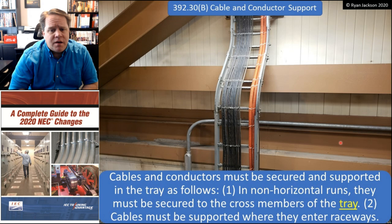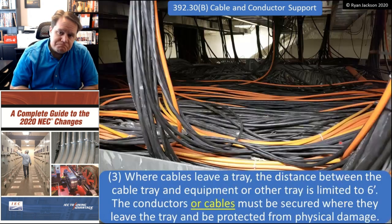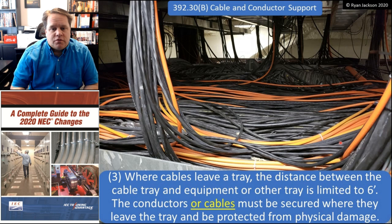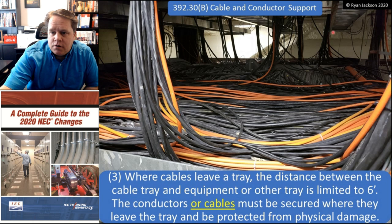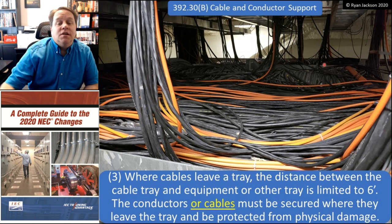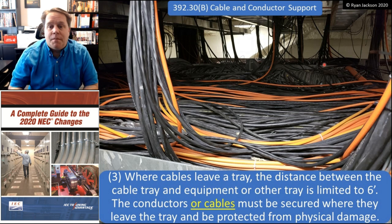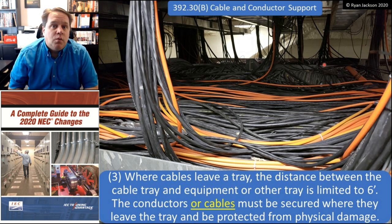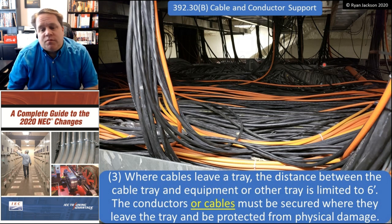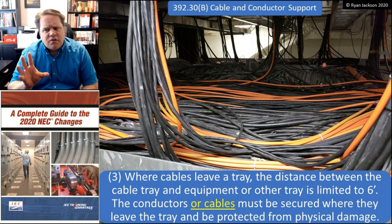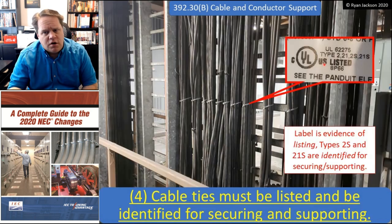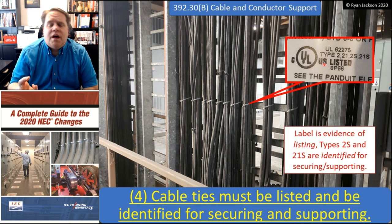Item two: cables have to be supported when they enter the raceway. Item three: where cables leave the cable tray, the distance between the cable tray and other equipment is limited to six feet — we can't just run cables down the wall with no support. The conductors or cables have to be secured where they leave the tray and protected from physical damage.